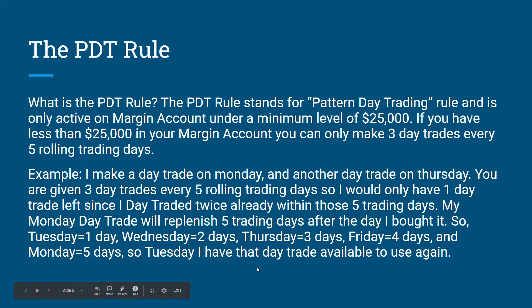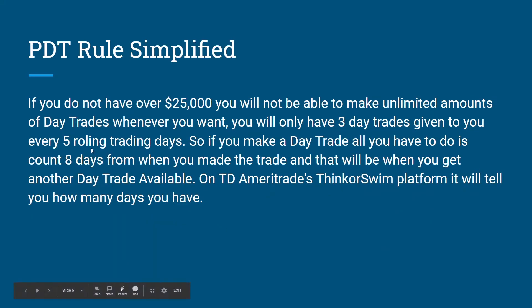PDT rule simplified: if you do not have over $25,000, you will not be able to make an unlimited amount of day trades. You're only allowed three day trades every five rolling trading days, at least on TD Ameritrade. If you make a day trade, you have to wait five trading days — which works out to about eight calendar days — from the day you bought it to get that day trade back. TD Ameritrade's thinkorswim platform will actually tell you how many day trades you have left.